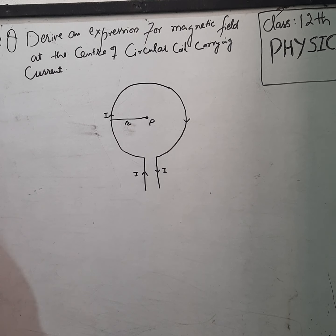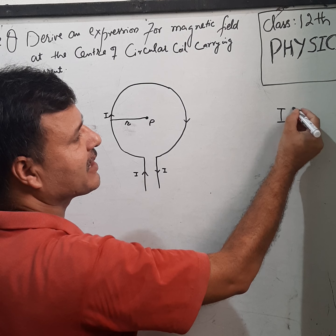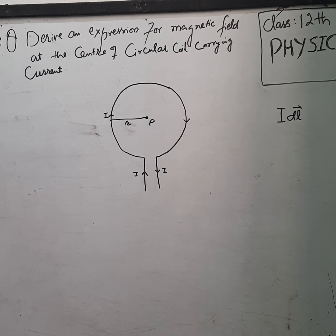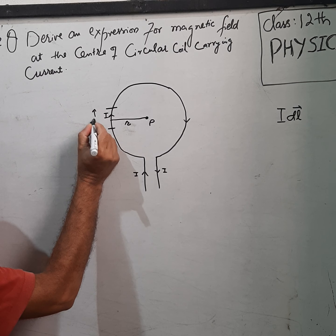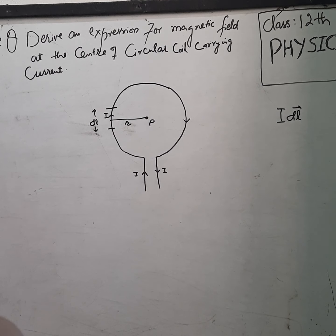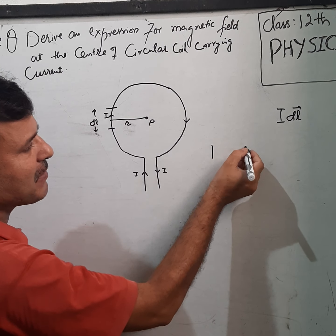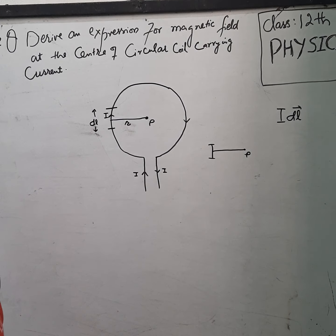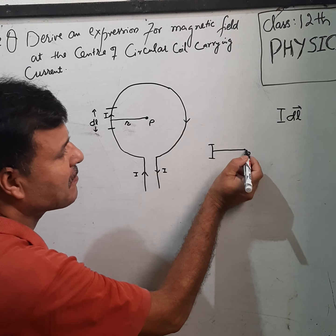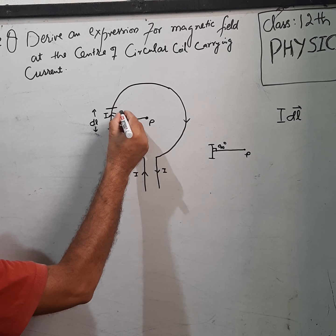Biot-Savart Law लगाने के लिए current element की ज़रूरत पड़ती है। Current को small element dl vector से multiply करते हैं तो current element बनता है। हम एक small current element लेंगे जिसकी length dl रखेंगे। अगर इस circle की छोटी सी arc लेंगे, center से perpendicular डालेंगे तो radius vector आएगा। छोटी arc को straight line treat कर सकते हैं, और radius पड़ने पर angle θ = 90° होता है।